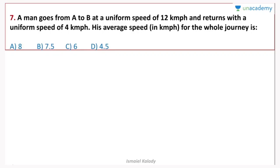The third question: A man goes from A to B at a uniform speed of 12 km per hour and returns with a uniform speed of 4 km per hour. His average speed in km per hour for the whole journey is what? So he goes from A to B at 12 km and returns at 4 km speed.